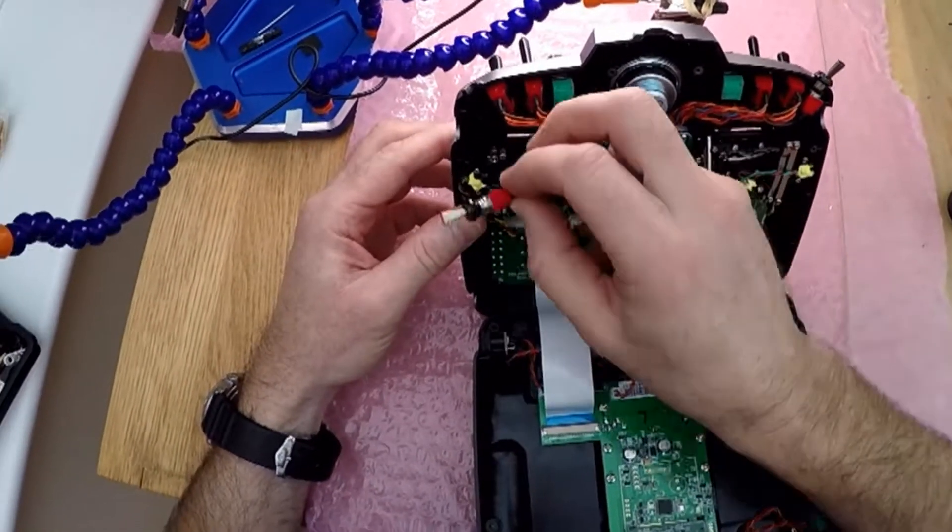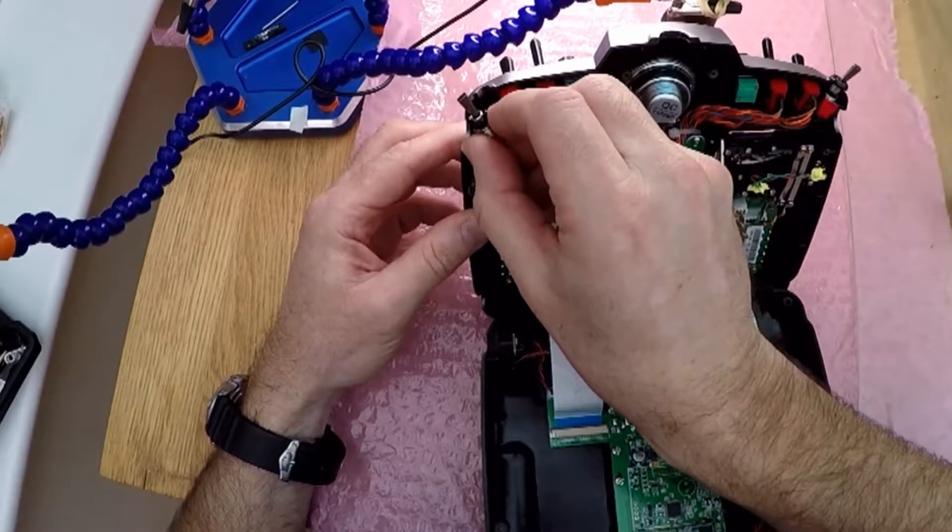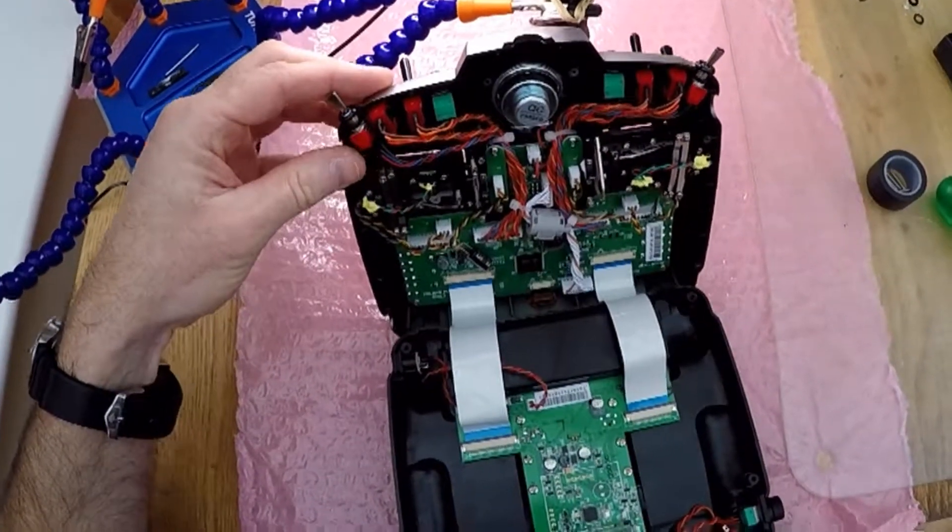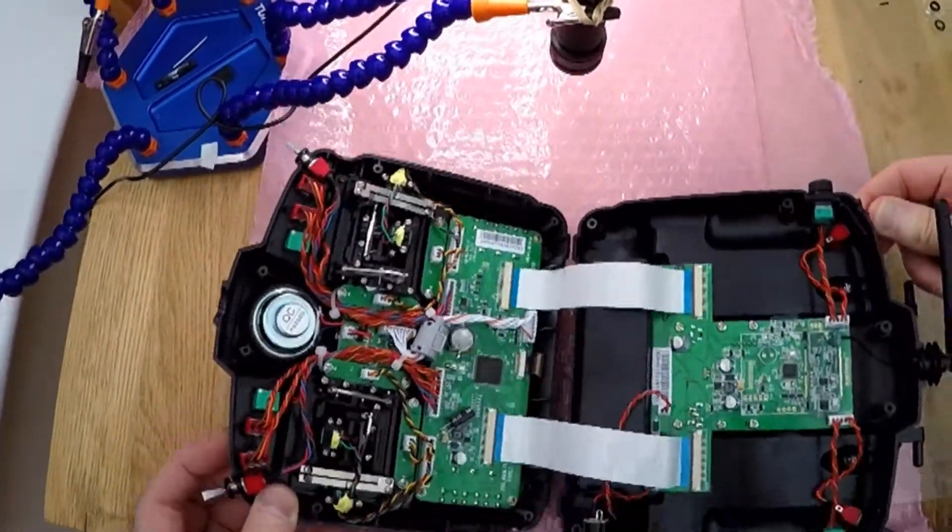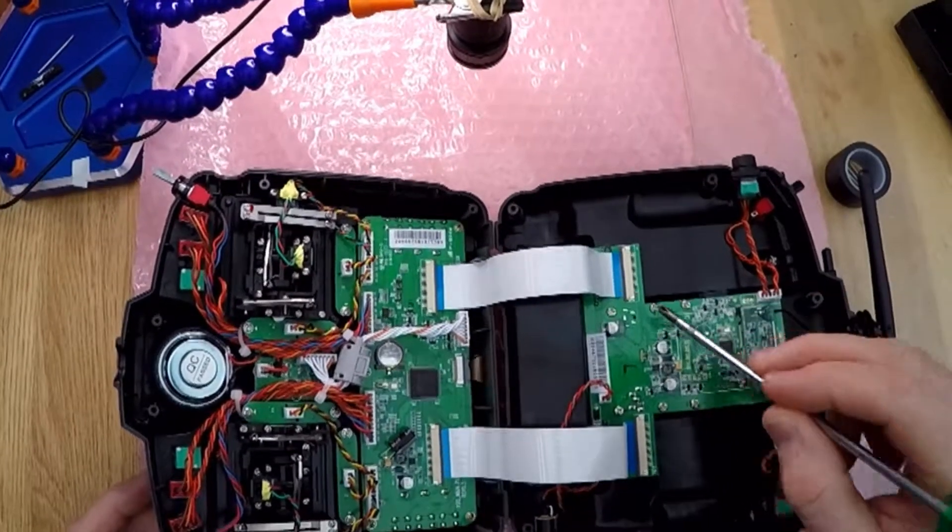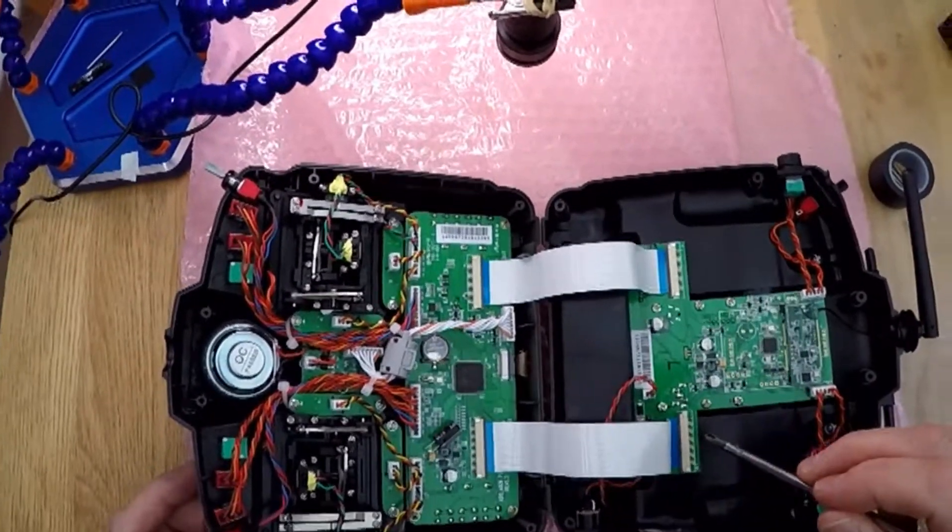Now, these are the offending ribbon cables which I disconnected before removing the battery and shorted out the STM processor on the main board.